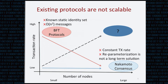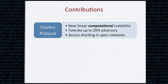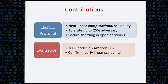In this work, we ask whether we can design a scalable protocol that scales up the generation rate simply by introducing more nodes into the network. Our contributions are twofold. First, we introduce the Elastico protocol, which provides near-linear computational scalability — meaning if we double the CPUs in the network, we double the generation rate. Elastico can tolerate up to 25% adversaries and is the first candidate for a secure sharding protocol for blockchain in open networks. Our second contribution is a prototype of Elastico evaluated on Amazon EC2, running up to 1,600 nodes to confirm all scalability properties.